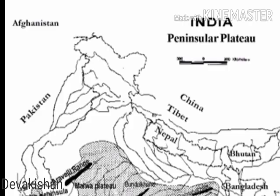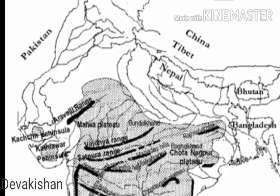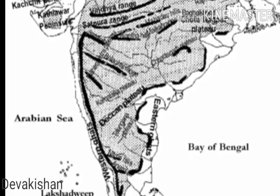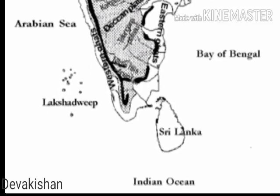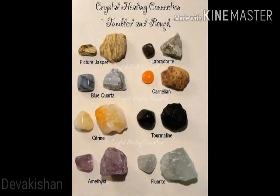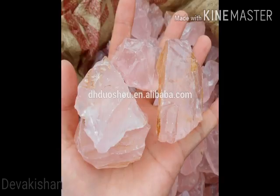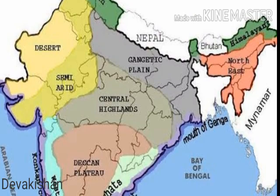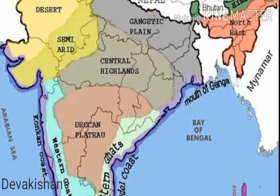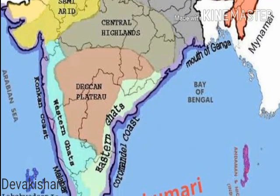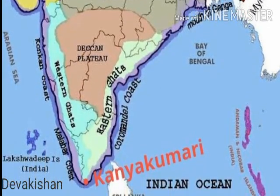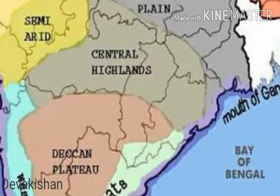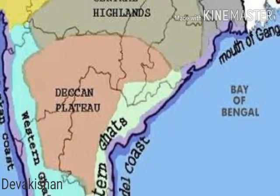The Peninsular Plateau is also known as the Indian Plateau, as it is surrounded by the sea on three sides — the Arabian Sea on the west, the Bay of Bengal on the east, and the Indian Ocean on the south. It is mainly composed of old crystalline, hard igneous and metamorphic rock. Metallic and non-metallic mineral resources are abundantly found here. The topography is slightly tilted towards the east, with the Western Ghats and Eastern Ghats forming the western and eastern edges respectively. The southernmost tip is Kanyakumari. Two broad divisions are the Central Highlands (Malwa Plateau) and the Deccan Plateau.